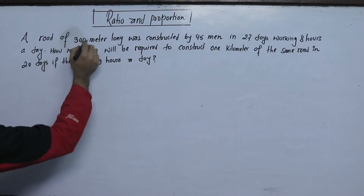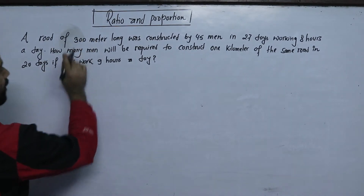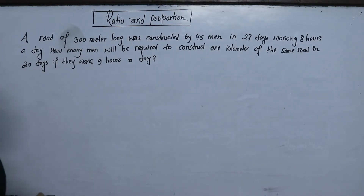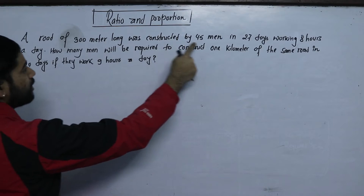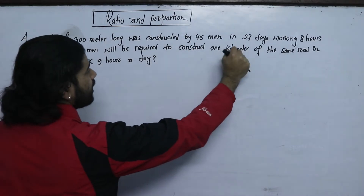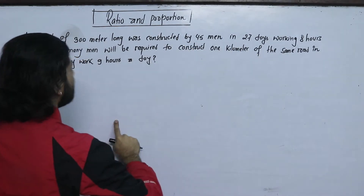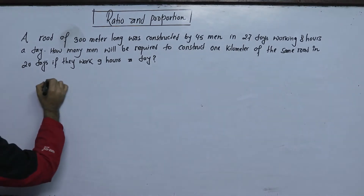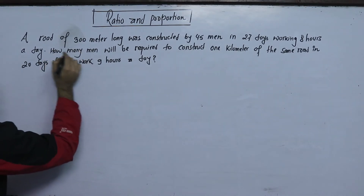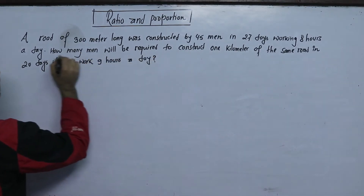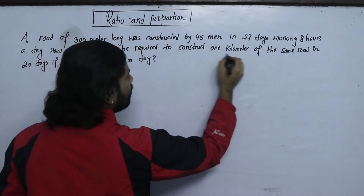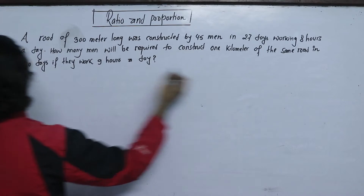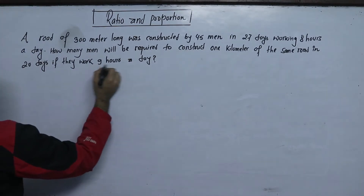A road of 300 meters long was constructed by 45 men in 27 days working 8 hours a day. How many men will be required to construct 1 km of the same road in 20 days if they work 9 hours a day?